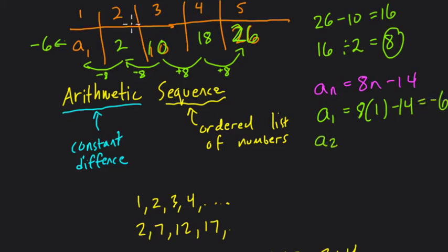We know A sub 1 needs to equal negative 6. And it does. It's 8 times 1 minus 14 is negative 6. If we plug in A sub 2, now we said it before, that should give us 2. Let's try it. 8 times 2 minus 14 is 16 minus 14, which is 2. It's working.